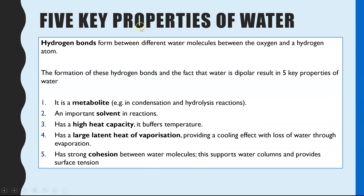Those hydrogen bonds that form are key to the five properties of water. We'll go through what we mean by it being a metabolite, a solvent, having a high heat capacity, having a large latent heat of vaporisation, and finally having strong cohesion — looking at how structure links to each of those and why they are so important.